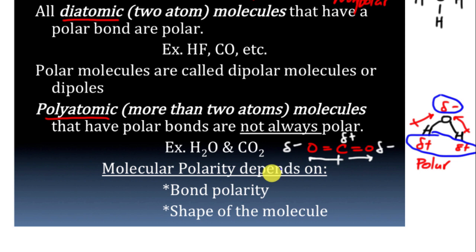So in order to figure out molecular polarity, it depends on the bond polarity and the shape of the molecule. Hence why we had to go through Lewis structures and why we had to go through molecular geometry.